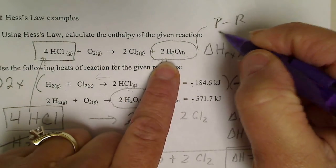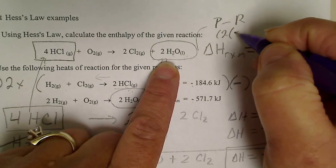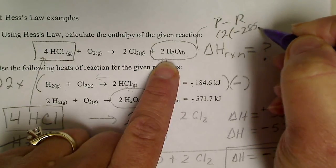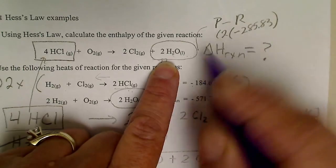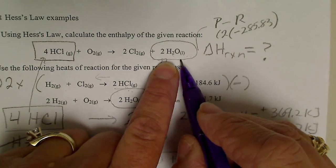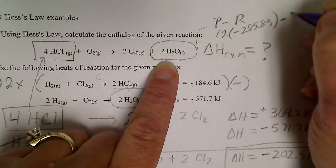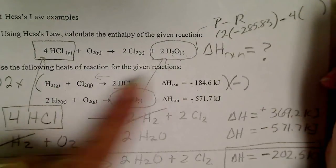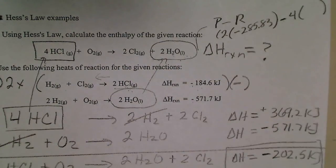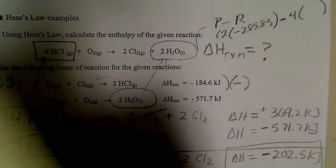So if I just use products minus reactants and I calculate this from the appendix, if I have two moles of water, that's going to be two times negative 285.83. That's the heat of formation for liquid water, minus four times the heat of formation for hydrogen chloride. So I've got to look that one up. And that value,